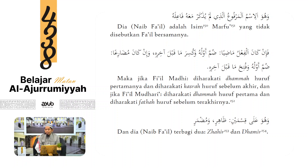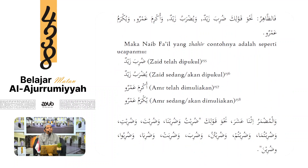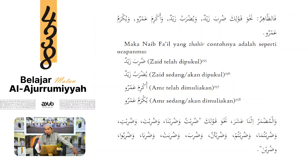Na'ib fa'il terbagi dua: dhohir dan domir. Contoh dhohir: duriba Zaidun - na'ib fa'il Zaidun. Yudrobu Zaidun - na'ib fa'il Zaidun. Wa ukrima Amrun, wa yukrimu Amrun - na'ib fa'il Amrun. Ada keterangan di bawah. Wal-mudmaru itna 'asyara - domir na'ib fa'il ada dua belas juga, bedanya fi'ilnya diubah dari ma'lum menjadi majhul.